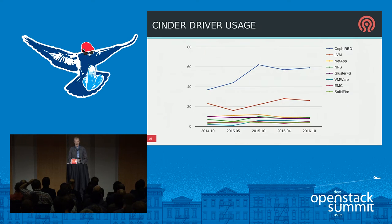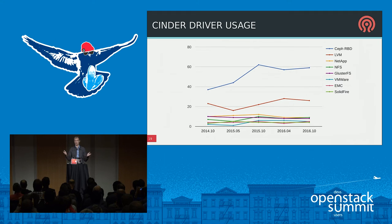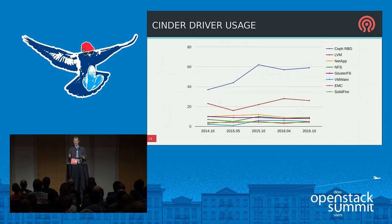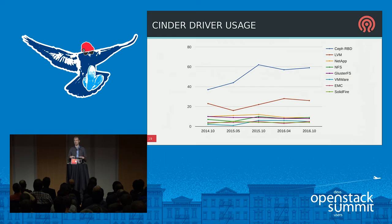Looking at OpenStack user surveys over the last two and a half to three and a half years, Ceph has consistently been adopted by roughly half or a bit more than half of OpenStack deployments — rivaled only by LVM, which is ephemeral non-reliable storage on local disk addressing a different use case. I bring this up not just to pat ourselves on the back, but mostly to point out there are still many other storage systems in use, and it's a useful exercise to ask why.